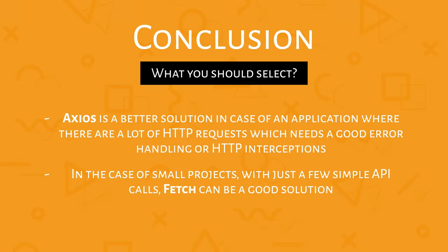To summarize: Axios is a better solution for applications with a lot of HTTP requests that need good error handling or HTTP interception. For a small project with just a few simple API calls, Fetch can be a great solution as well. It's also important to remember that Axios is supported by most browsers and the Node.js environment, while Fetch is supported by most modern browsers but may have issues with older ones. I hope this helps you select the best solution for your project.